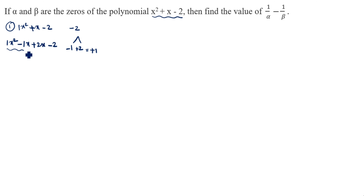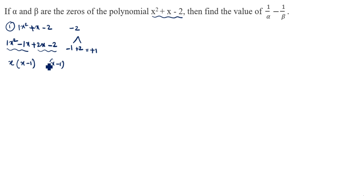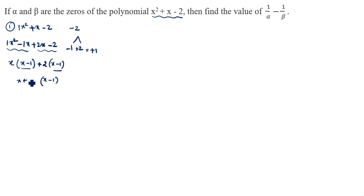Now we pair the terms. From the first pair, x is common, giving x times (x minus 1). From the second pair, 2 is taken outside, giving 2 times (x minus 1). So x minus 1 is common, and we can write it as (x minus 1)(x plus 2).